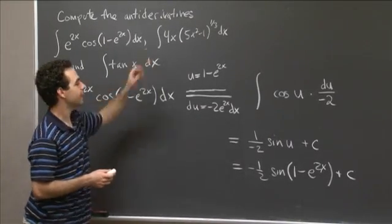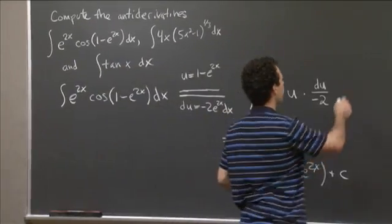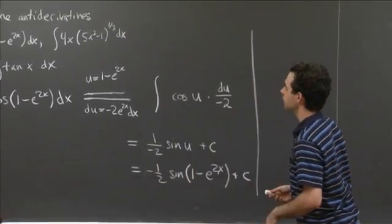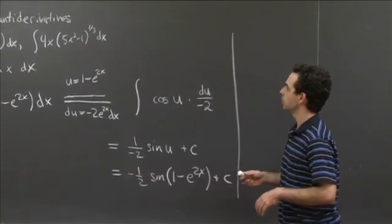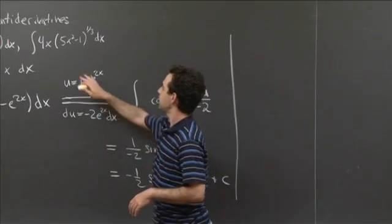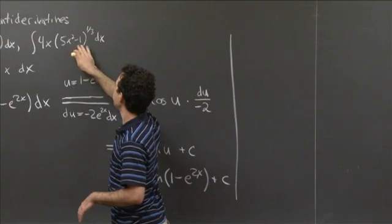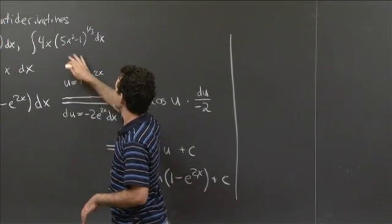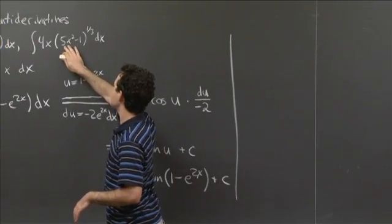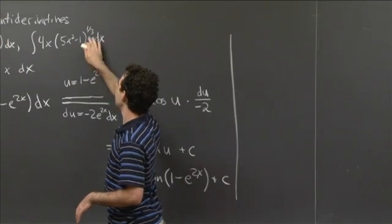OK. So now how about the second one? So the second one, we could also do it with a substitution. This is also a sort of a prime suspect for advanced guessing. So we see here that we have some, this polynomial raised to some power. So this is 5x squared minus 1 to the 1 third.